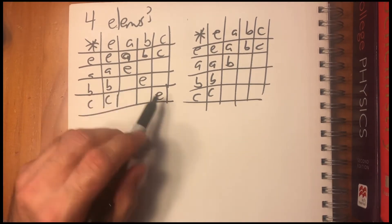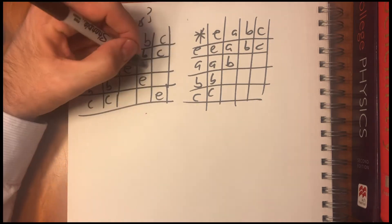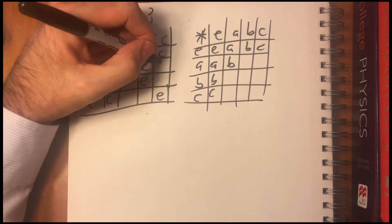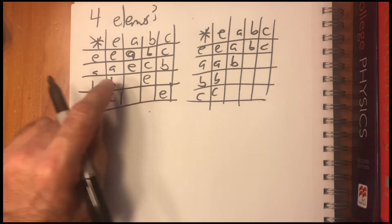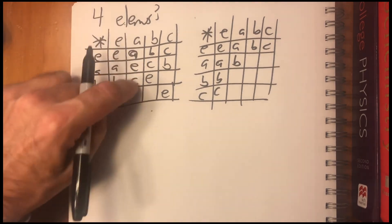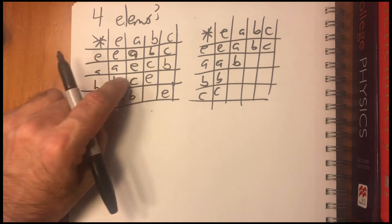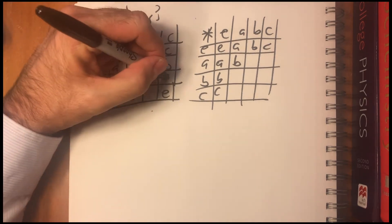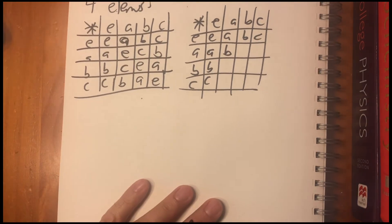So the only other way then is if the E's are straight down the diagonal. So let's see if we can fill it in this way. So we have A here, a B there. So this has to be C. This has to be B. We have an A. We have a B. So this has to be C. This has to be B. This has to be A. And this has to be A. Okay, that's one.